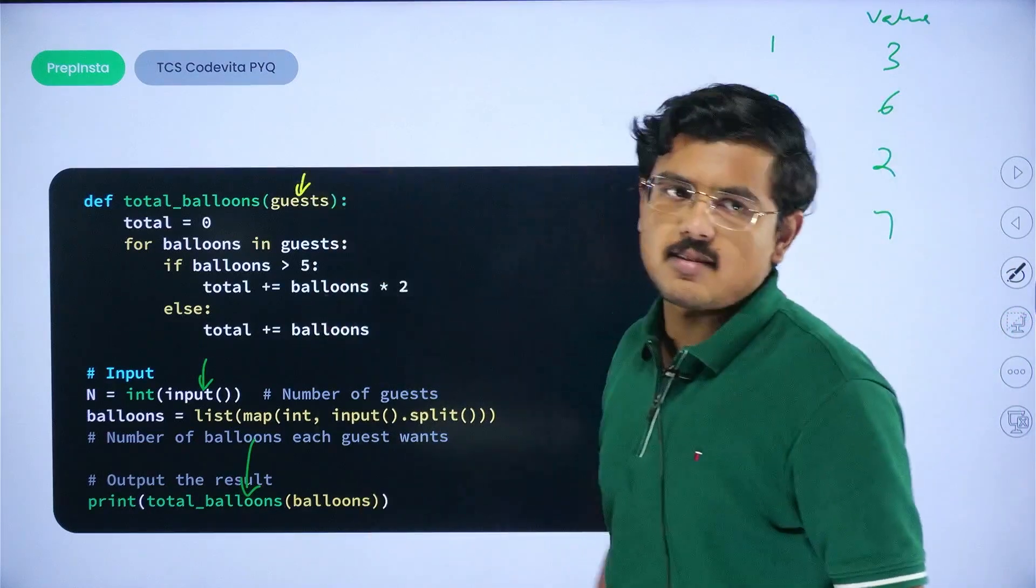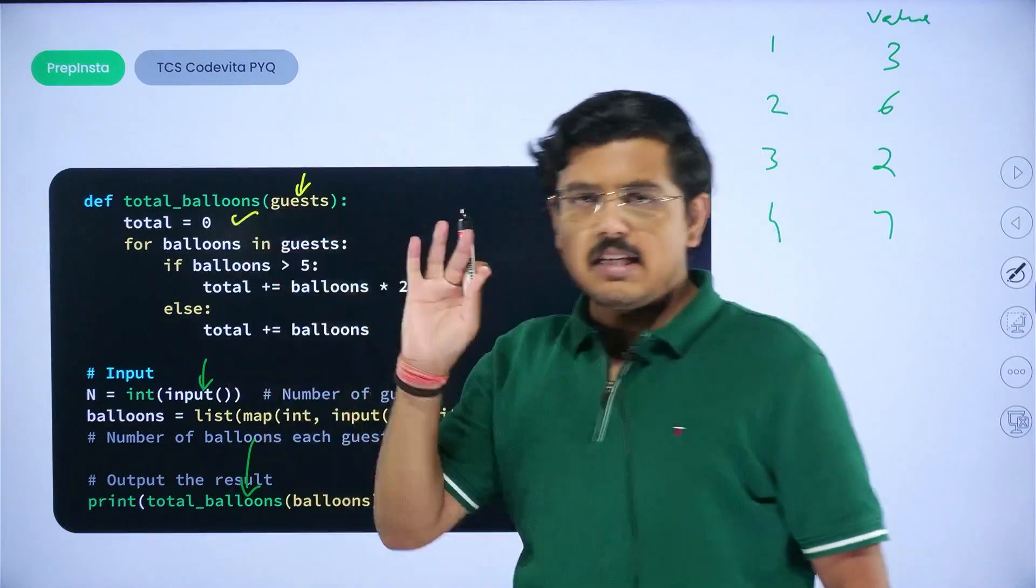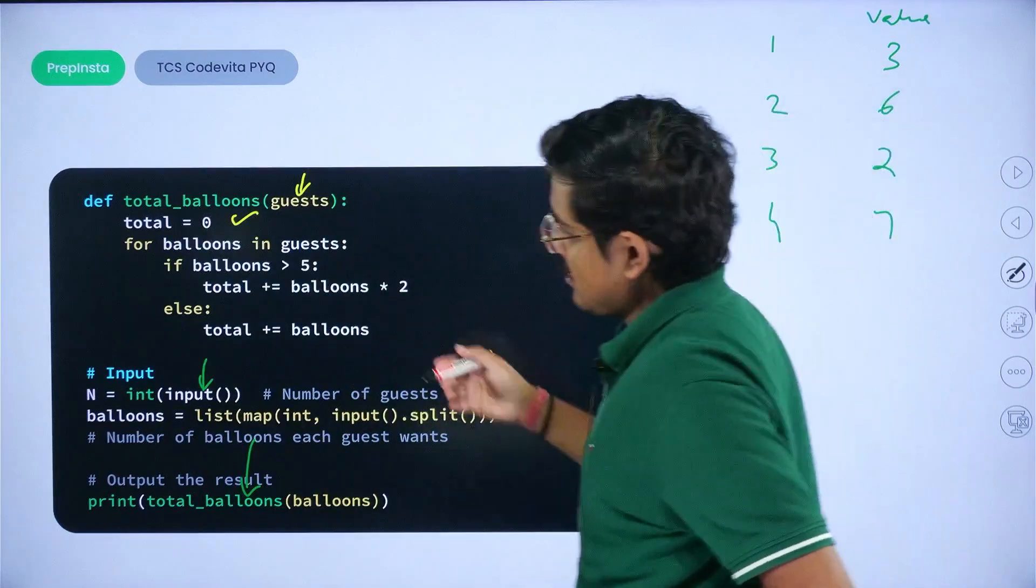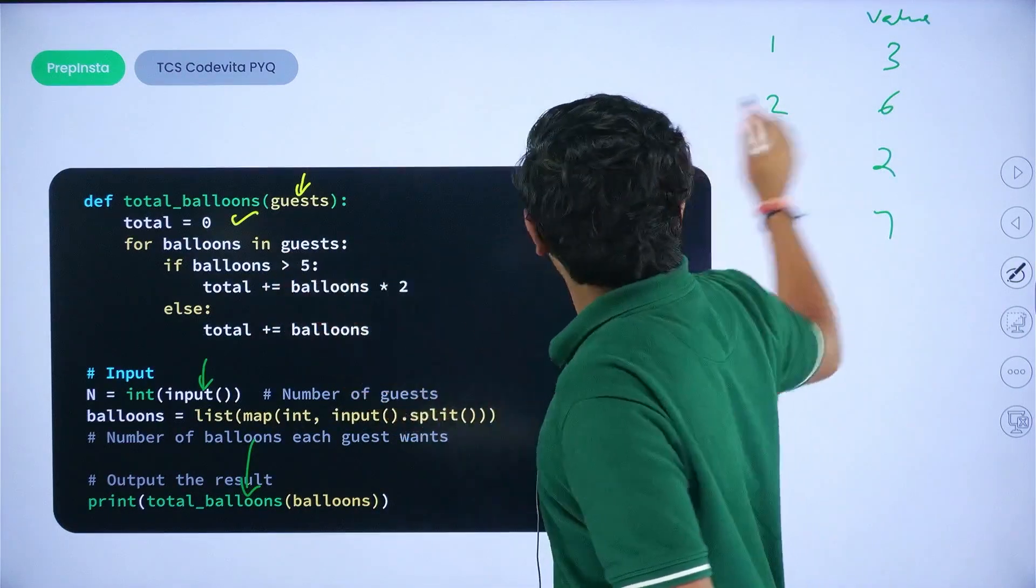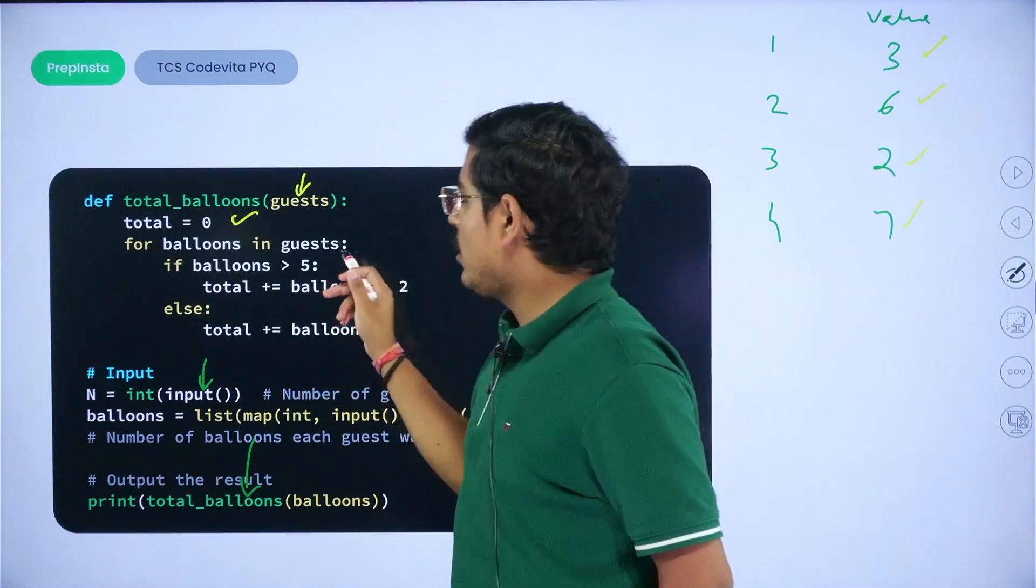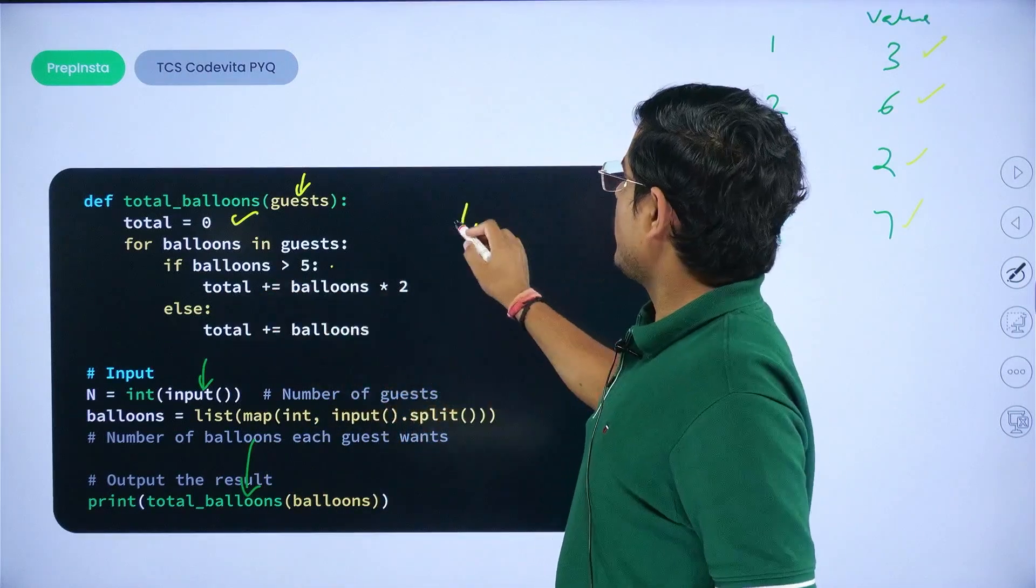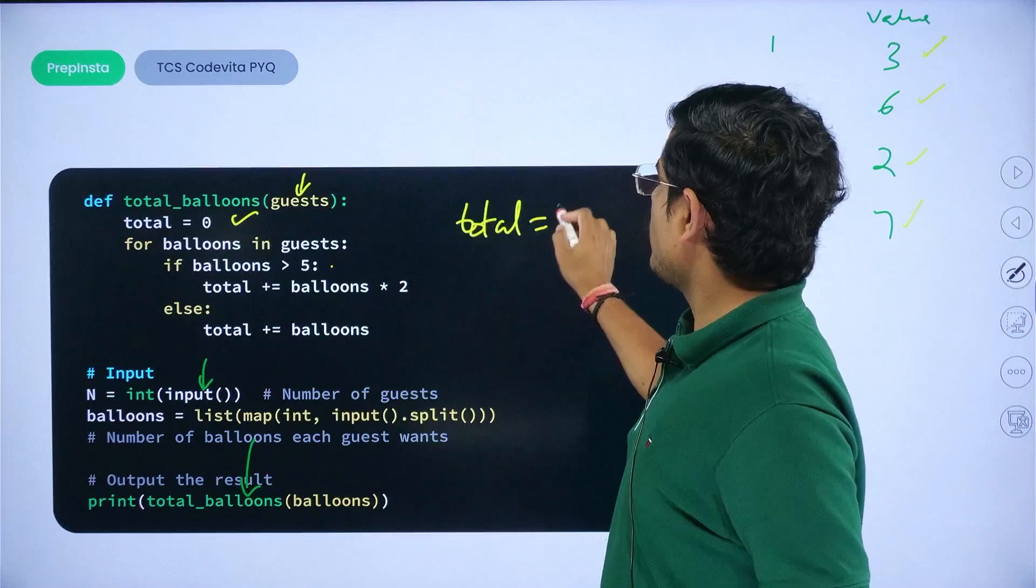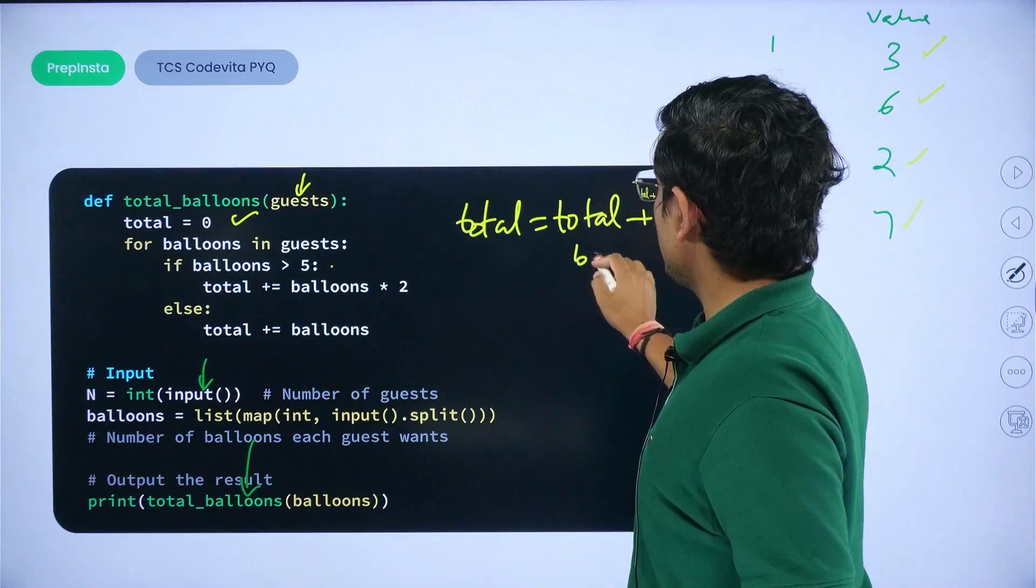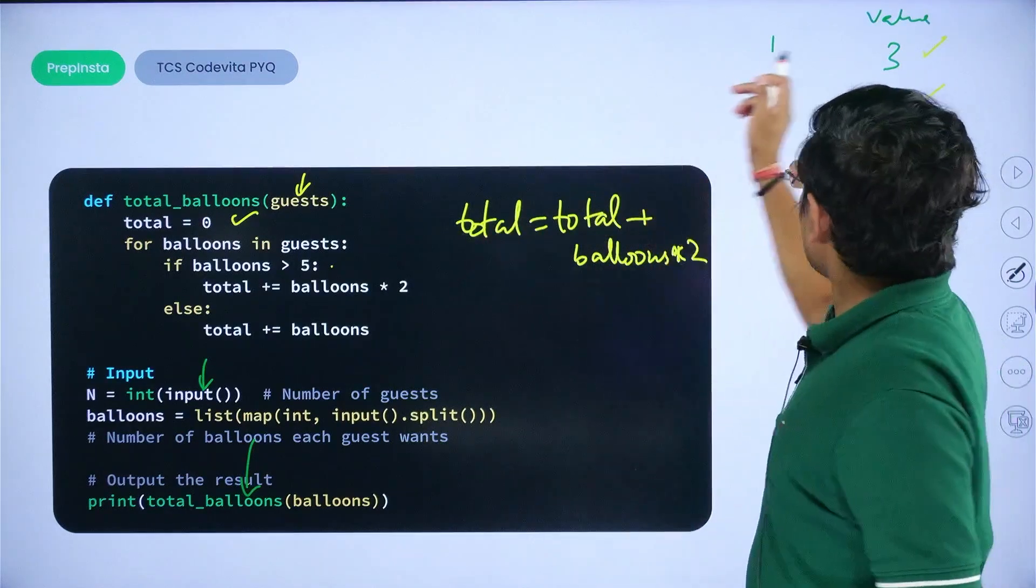Where you pass on this balloons as a list, and I am using a different name for this particular list here. I'm using guests as the name when I go to the function. Now I initialize total as zero. I initialize it as zero. For balloons in guests, so I will iterate through every value in this particular list. I would iterate through every value. So if balloons are greater than the number five, what you are going to do is you are going to add. This means total equals to total plus balloons into two.